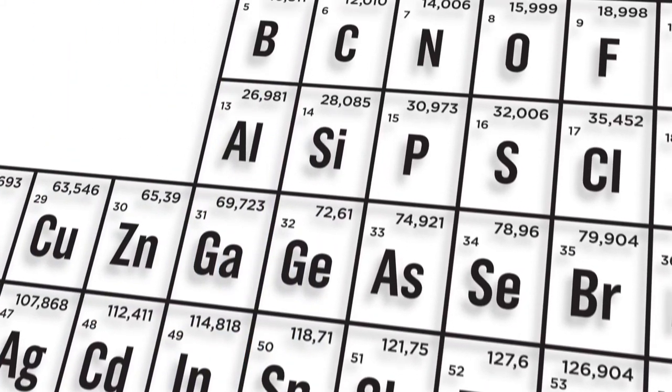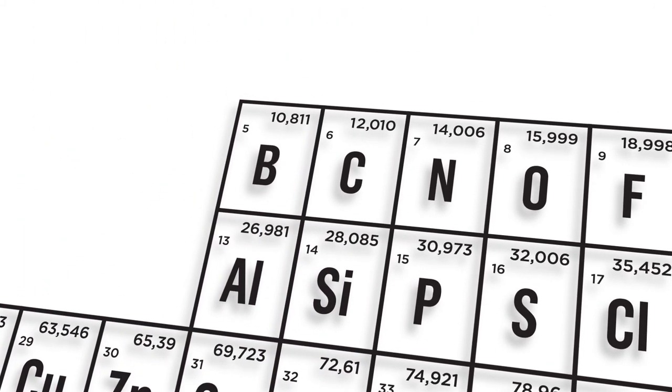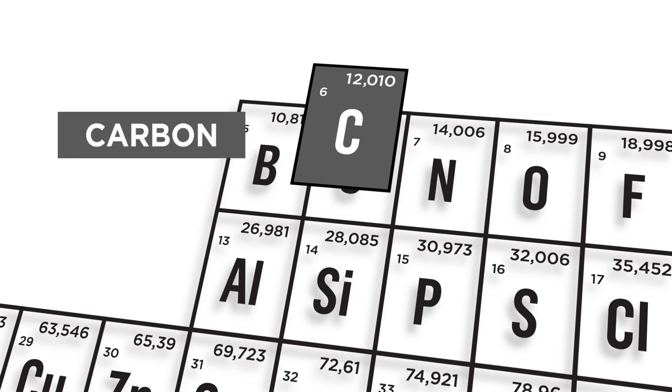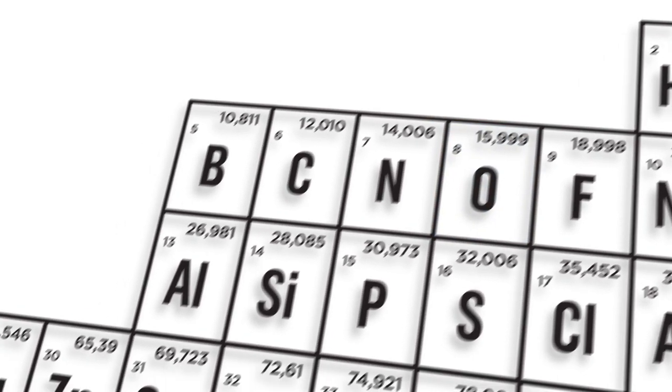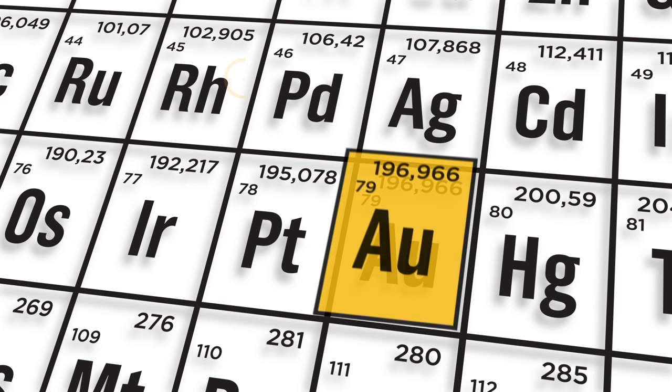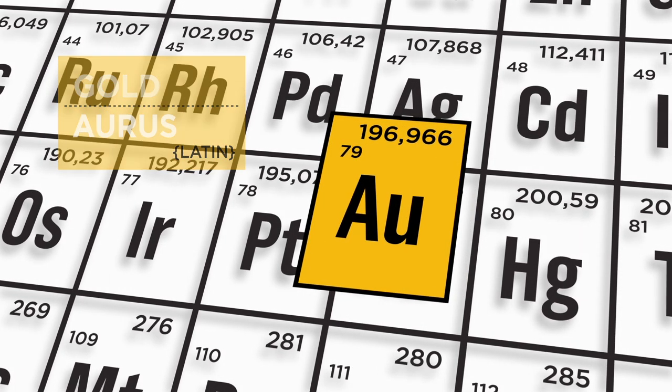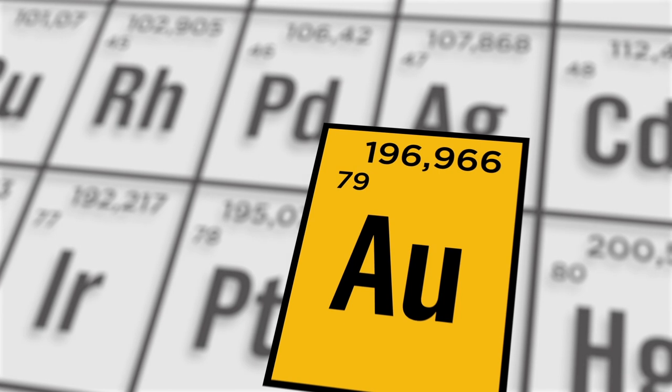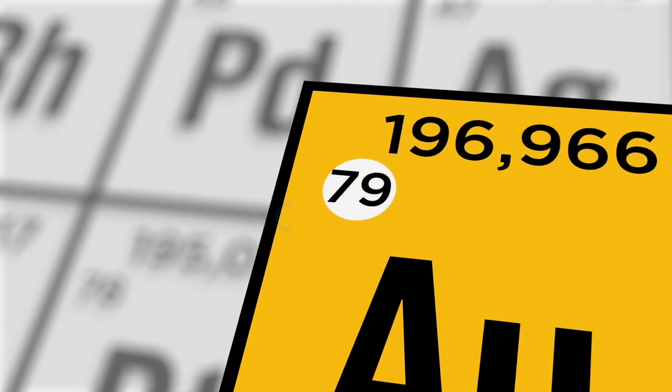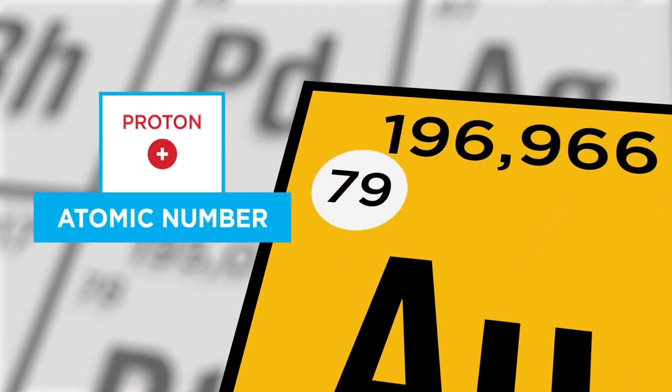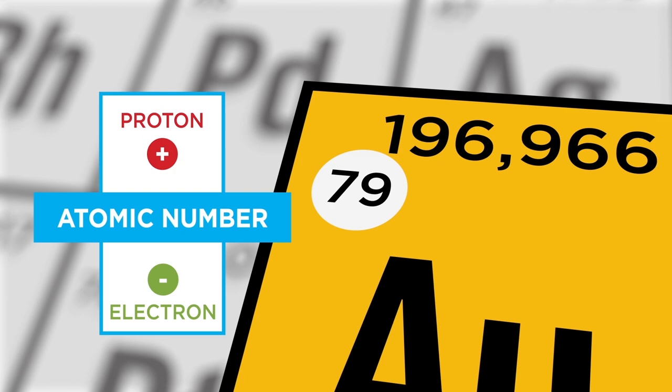Some people know what each of these letters represent. C is the chemical symbol for carbon. O is the chemical symbol for oxygen. The chemical symbol for gold is AU, because in Latin it was called aurus. And also some know the meaning of the numbers that appear next to the letters, like for example the atomic number, which is the number of positive and negative charges of the atom.